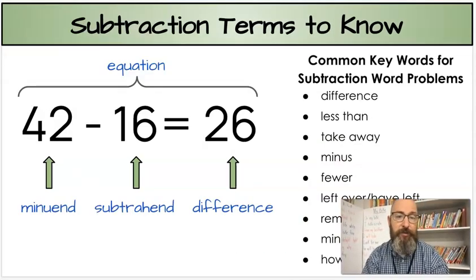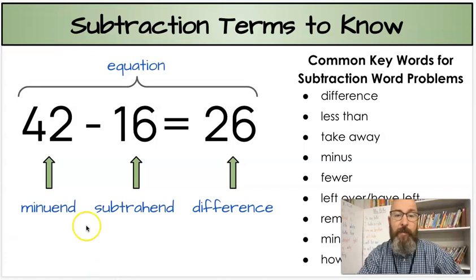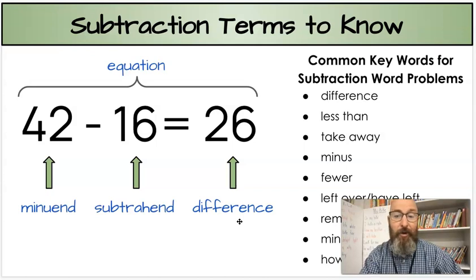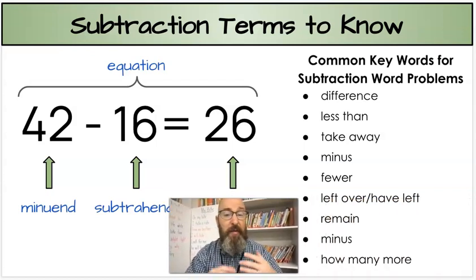Next, we have our subtraction terms to know. We know that when we subtract and we have a subtraction problem, the first number, the larger number, is usually called the minuend. The number that we're subtracting is called the subtrahend. And the answer to a subtraction question is called the difference because it's the difference between these two numbers. We put it all together, just like for addition, it's called an equation.